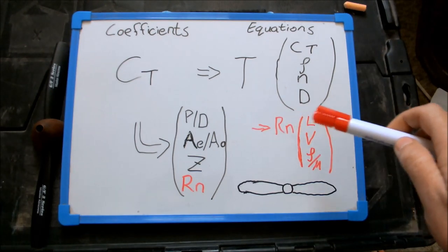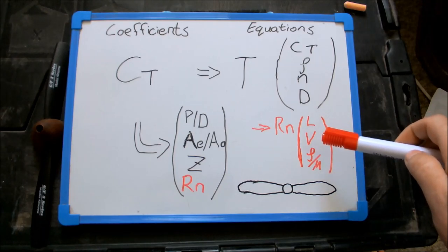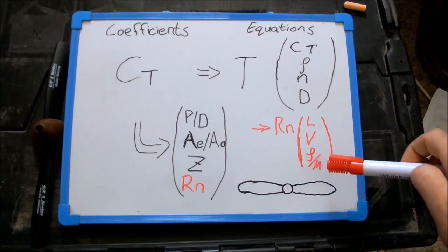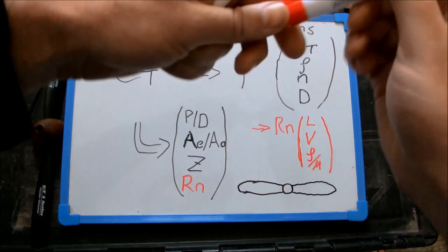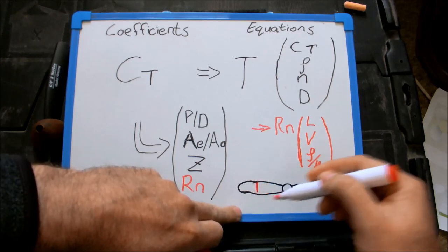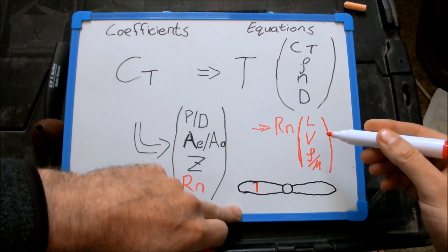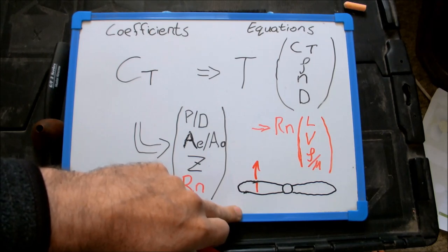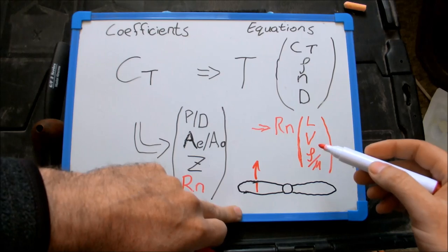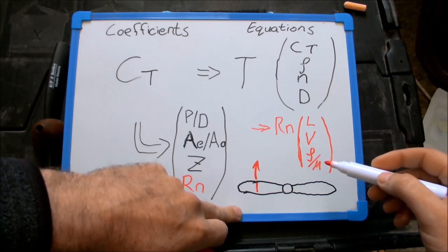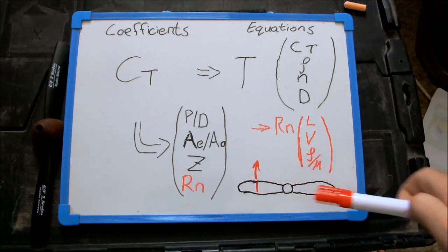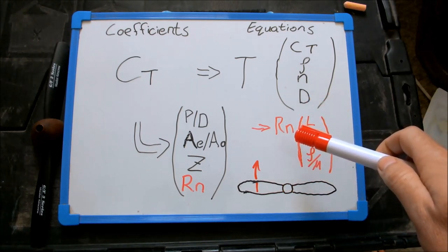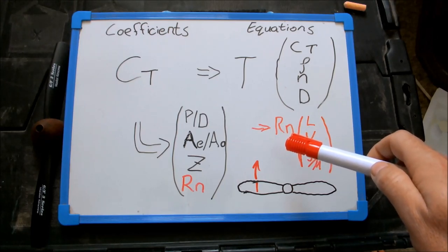Reynolds number itself is a function of a length measurement, a speed measurement and a fluid property which involves density and viscosity. Now with propellers, the length measurement is simply the blade chord at 75% of its radius. The speed measurement is the tangential velocity of that chord at that position. And then the fluid is simply the density of the fluid divided by the viscosity of that fluid. I know the RPM at which my aircraft propeller was tested in the wind tunnel. So I was able to calculate the Reynolds number for that specific test. And at 6,000 RPM it had a Reynolds number of 80,000.